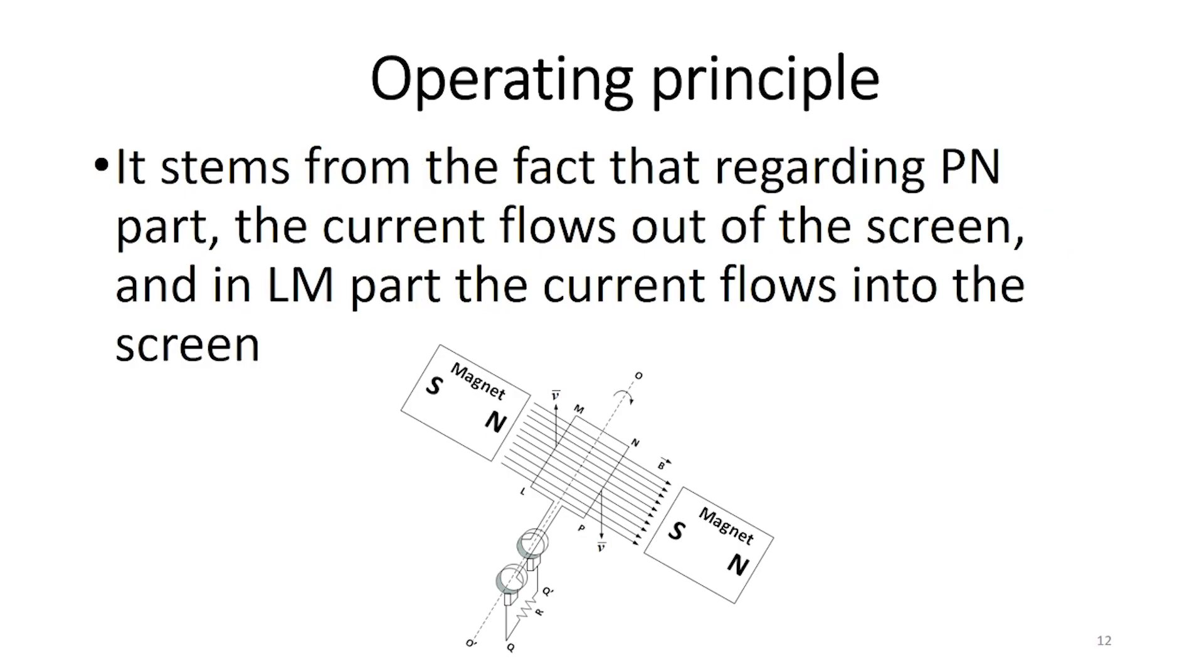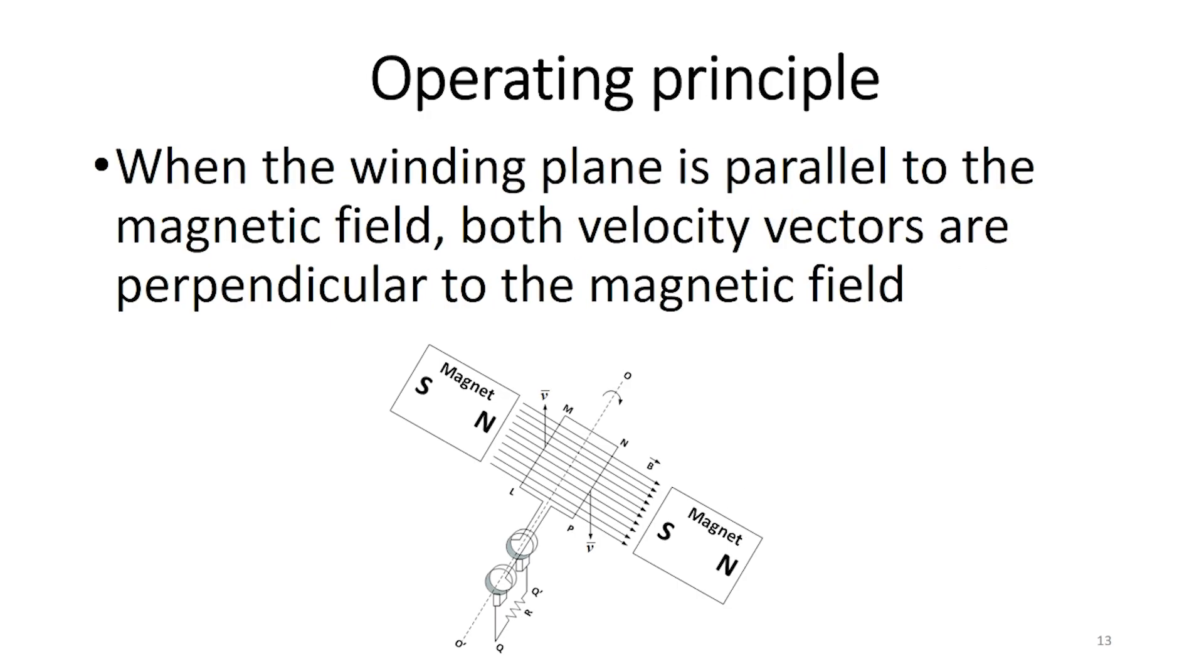It stems from the fact that regarding Pn part, the current flows out of the screen, and in Lm part, the current flows into the screen. When the winding plane is parallel to the magnetic field, both velocity vectors are perpendicular to the magnetic field.